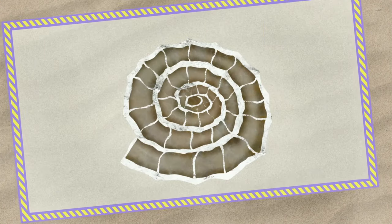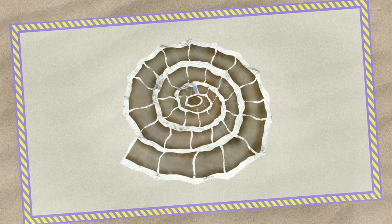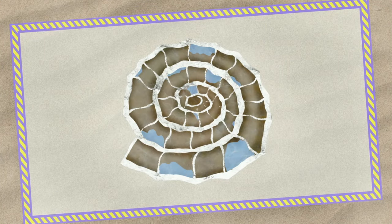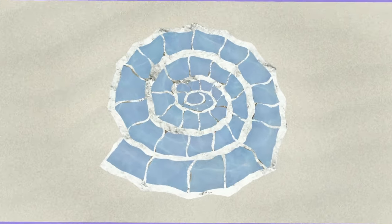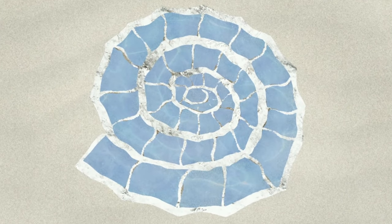After thousands of years, many, many layers of sand covered the shell, and gradually that sand became sandy rock. The shell survives, but the wide spaces inside the shell are filled with water that seeps in through the rock.